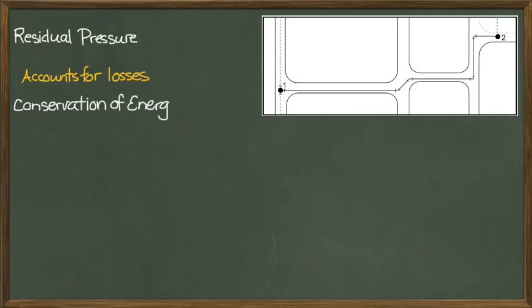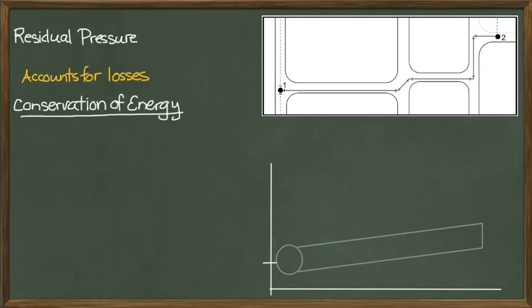The tool we use to calculate the residual pressure at a given point in a system is conservation of energy. The energy in a pressurized pipeline can be represented as follows. At point 1, we have the elevation of the pipeline and the pressure head accounting for the potential energy in the pipeline. Also at point 1, we have the velocity head, which accounts for the kinetic energy in the pipeline.